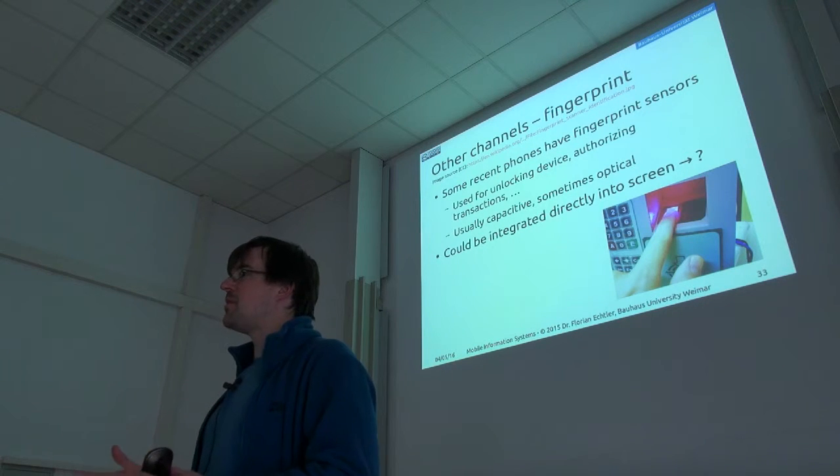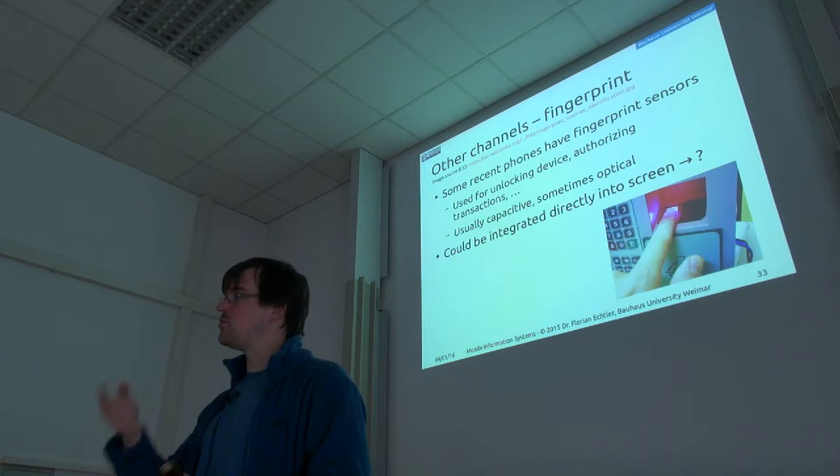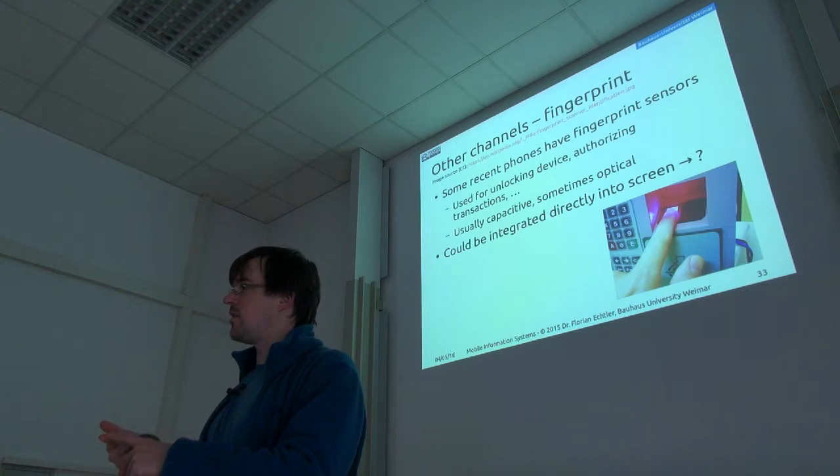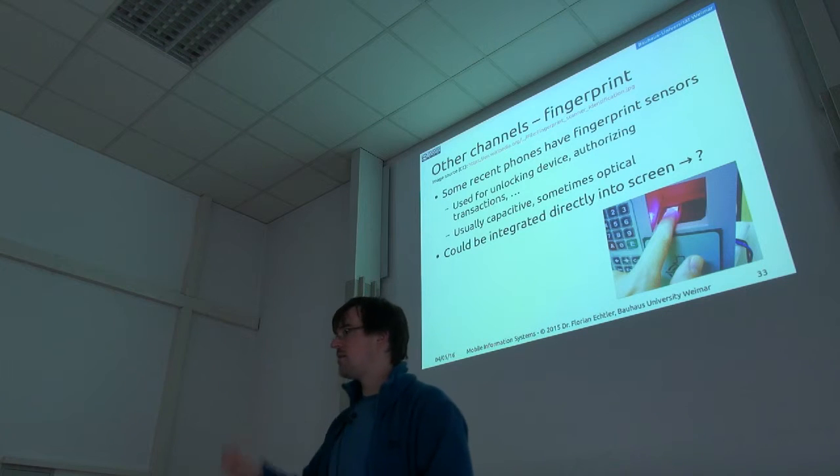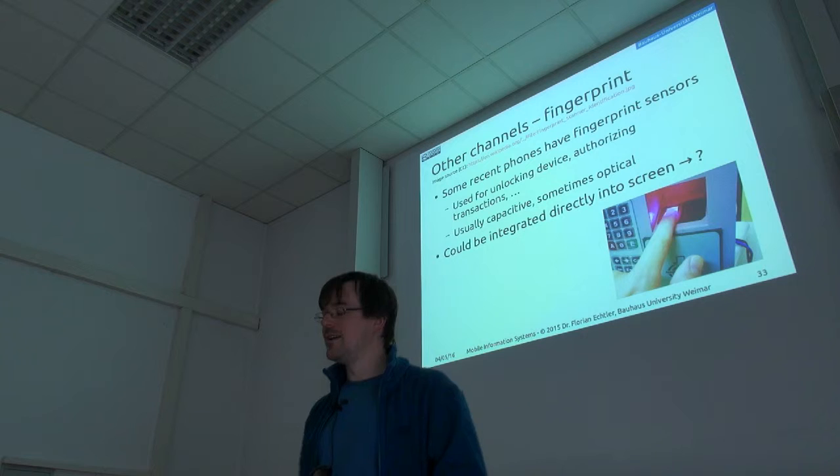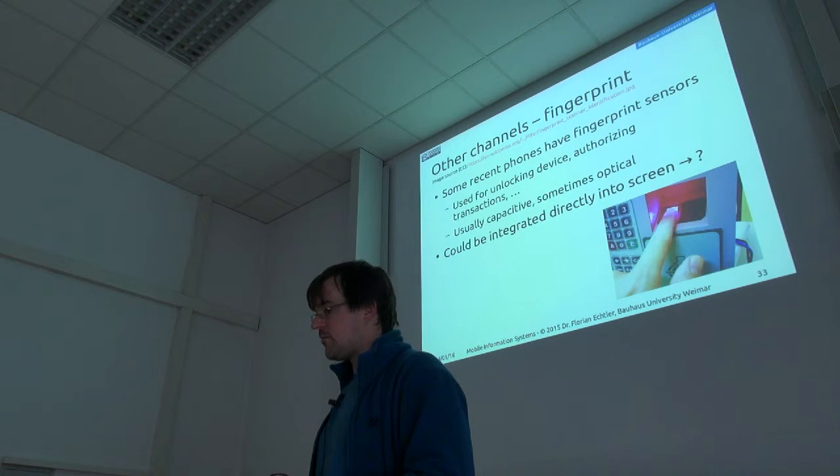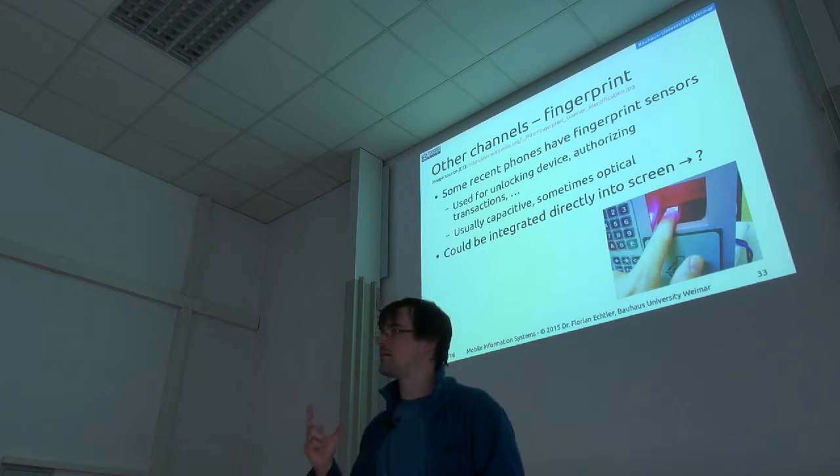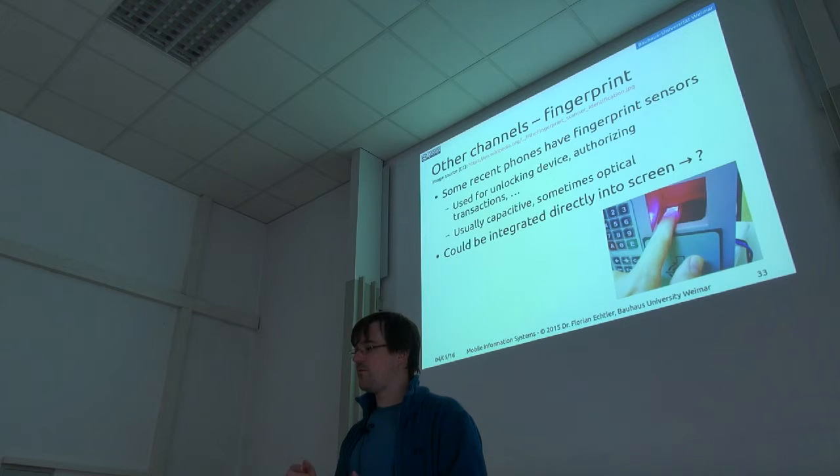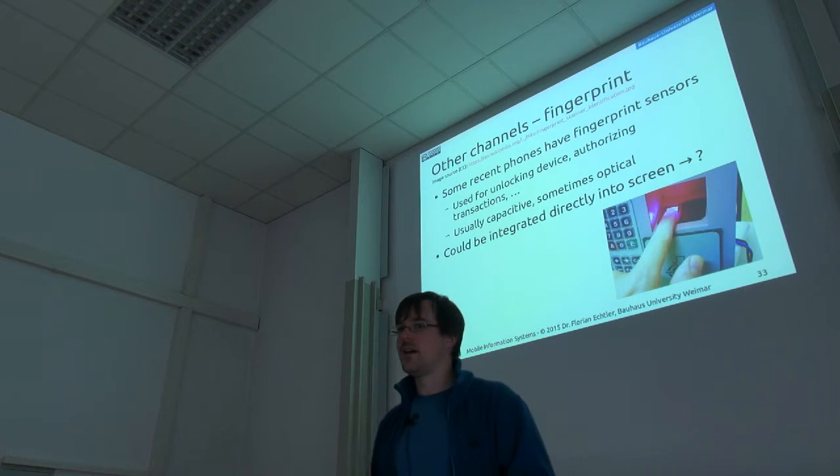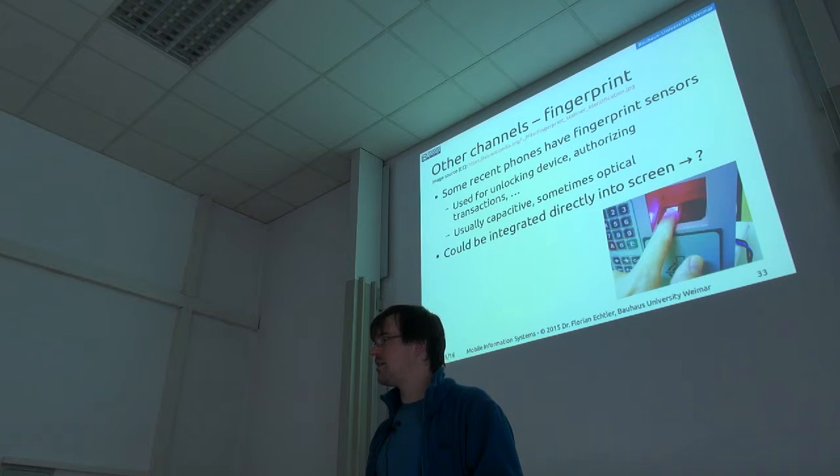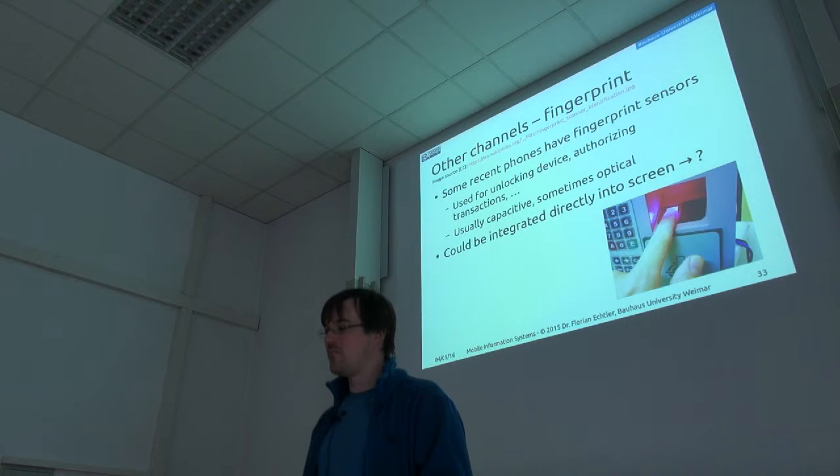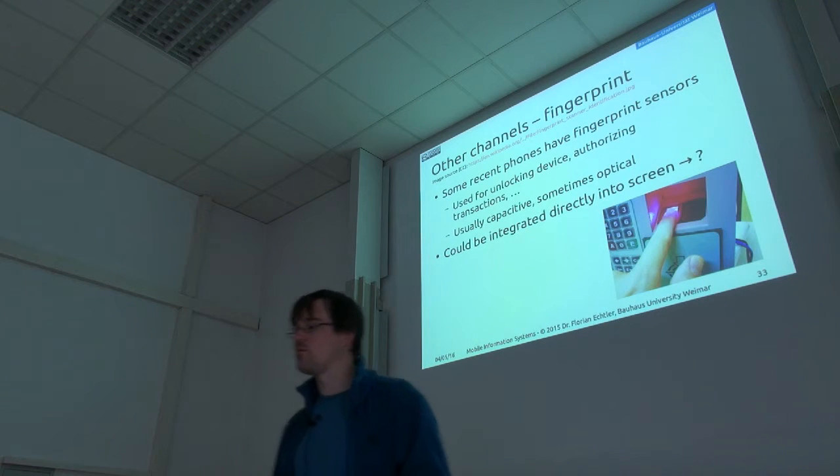It's actually very similar to the capacitive touchscreen, which we talked about last week, just at a much higher resolution. And then you can detect the individual fingerprints, the ridges, I think, on the finger. And that's basically also the main reason why that's not yet available on the whole screen, because then we would simply need a much higher touch resolution of, I don't know, 300 dpi or something. And right now it's only maybe 10 dpi or 50, perhaps, but it's far, far too low to actually detect fingerprint.